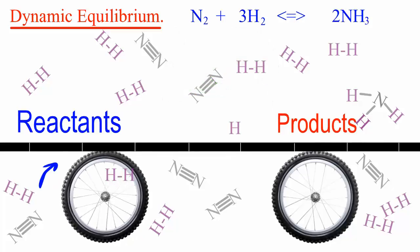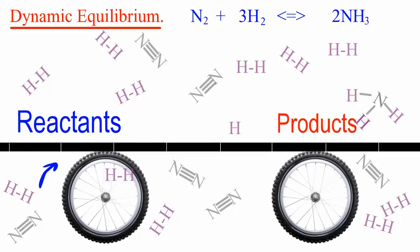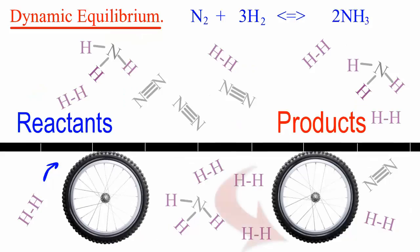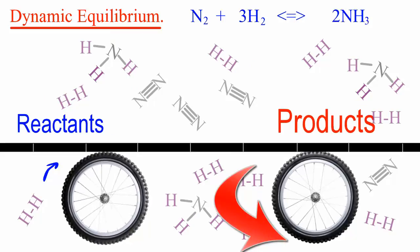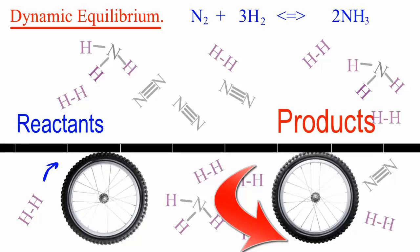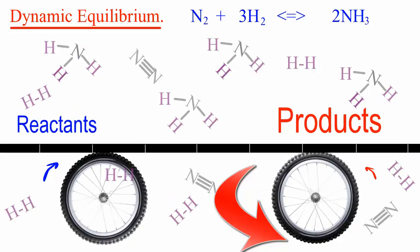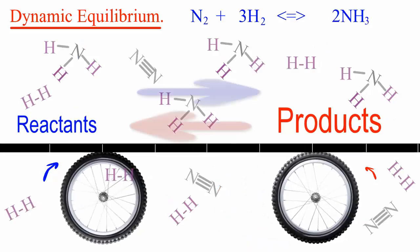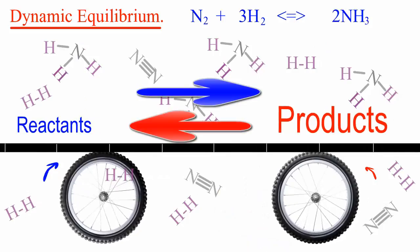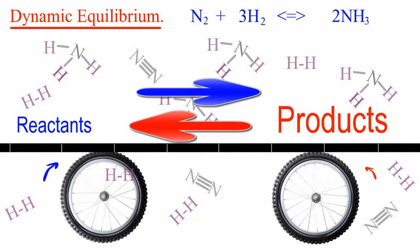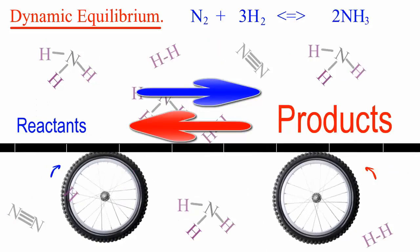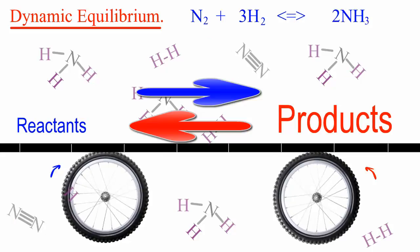Eventually, the rate at which products turn back into reactants equals exactly the rate at which reactants turn into products. At this point, the two wheels are traveling at the same speed but in opposite directions, and with the blue and red arrows we have the arrows used to represent a system in a state of dynamic equilibrium.